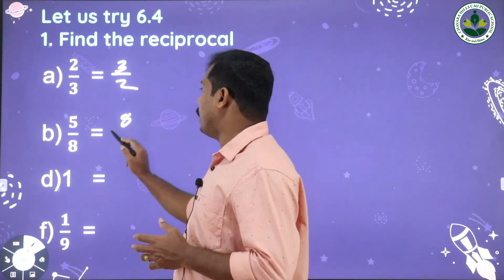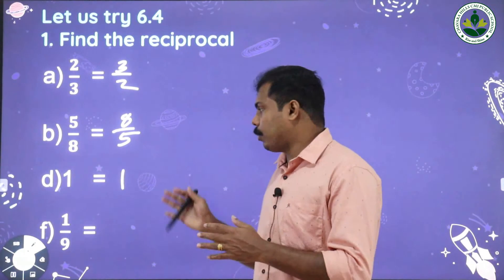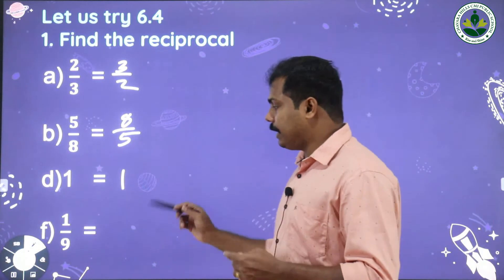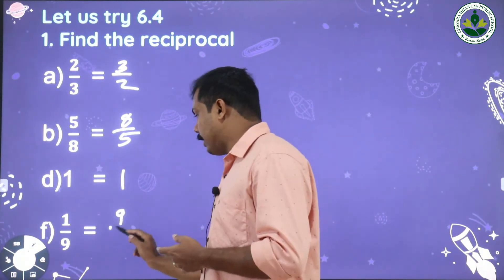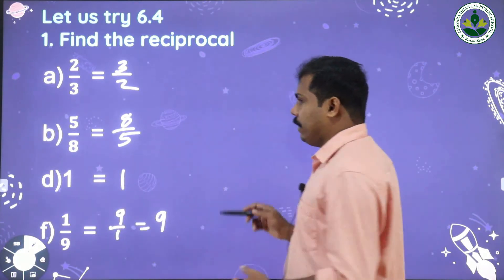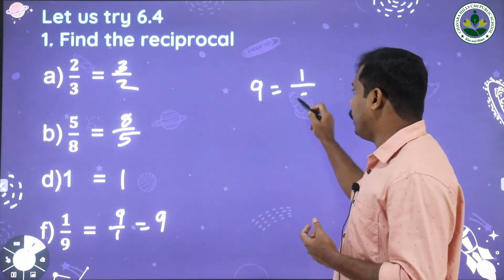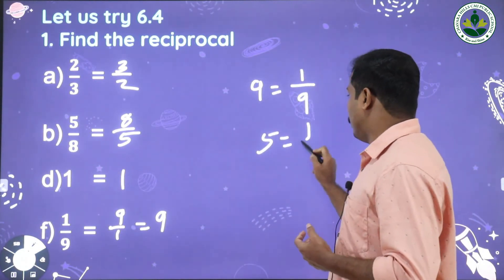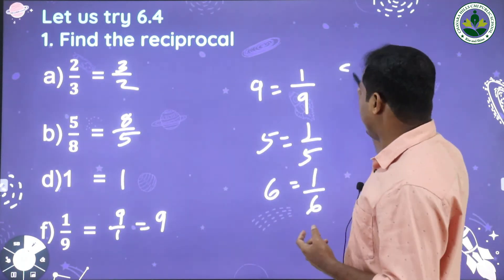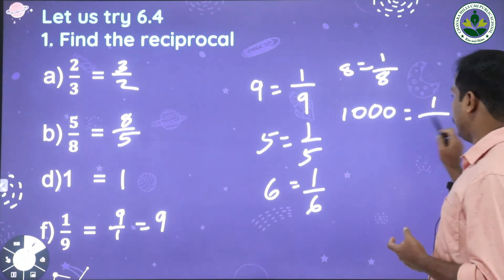Next, 5/8 becomes 8/5. And 1 — reciprocal of 1 is 1. Reciprocal of 1/9: interchange numerator and denominator, it becomes 9/1 which equals 9. So when we find the reciprocal of a whole number, it is 1 over that number. Reciprocal of 5 is 1/5, reciprocal of 6 is 1/6, reciprocal of 8 is 1/8, reciprocal of 1000 is 1/1000.